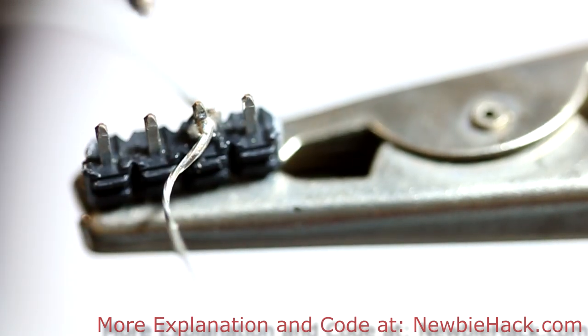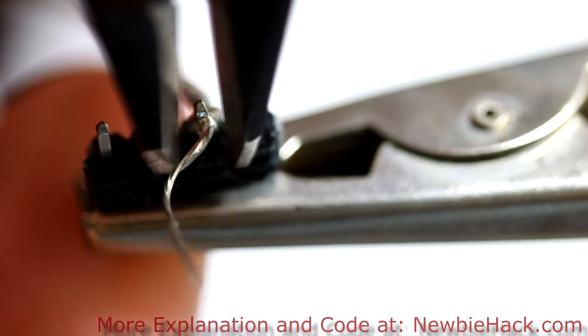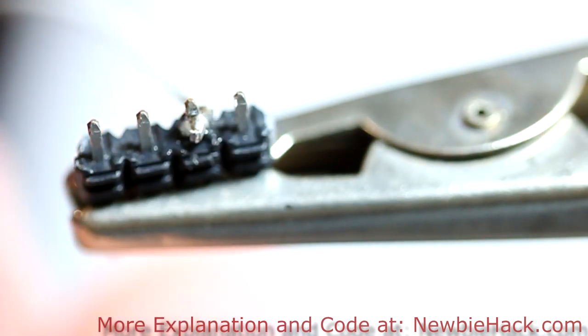The reason for that is because the heat shrink that's on here can shrink from the heat of the wire. Take your side snips and just snip off the extra wire on the end.